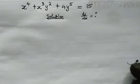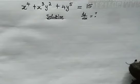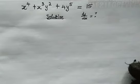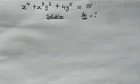Hello, goodbye viewers. Welcome back once again. In our today's video, we're going to find the derivative of the given following equation. We have x to the power of 4 plus x squared plus y squared plus 4y raised to the power of 5. This is equal to 15.